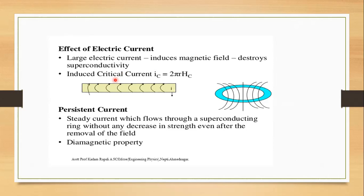The critical current is given by: Ic = 2πr × Hc. That is the formula related to electrical current. The next effect is the persistent current — the steady current which flows through the superconducting ring without any decrease in strength, even after removal of the field. This is called the persistent current.